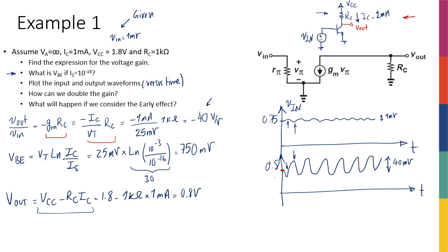The last part is, what will happen if we consider the early effect? Well, if we do consider the early effect, I know that I'm going to have an R0 here between the collector and the emitter. And then let's say that the question actually gave us the early voltage. Let's say early voltage is 10 volts. So given VA is equal to 10 volts.